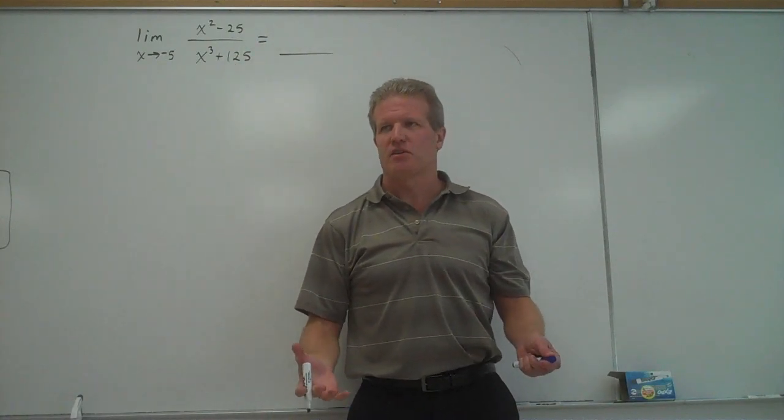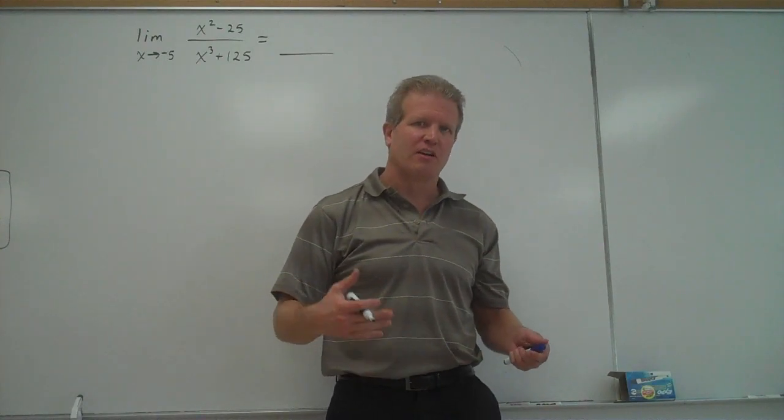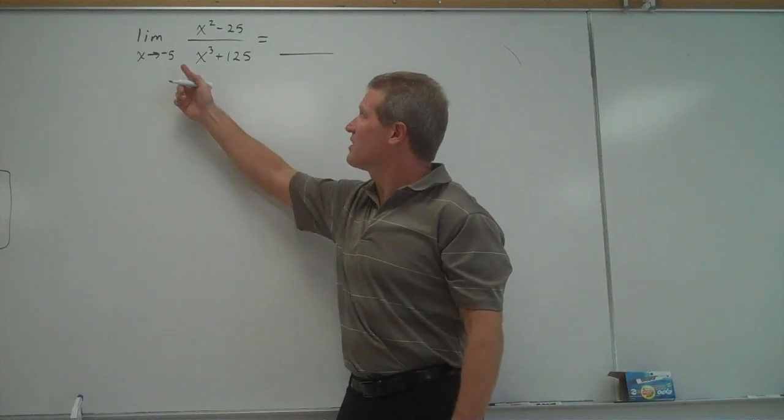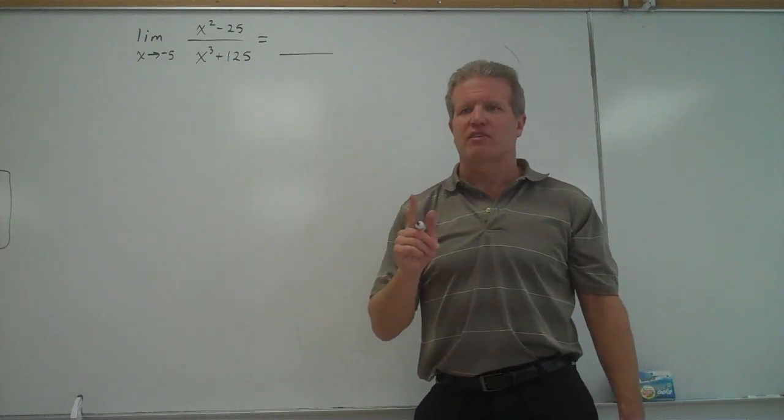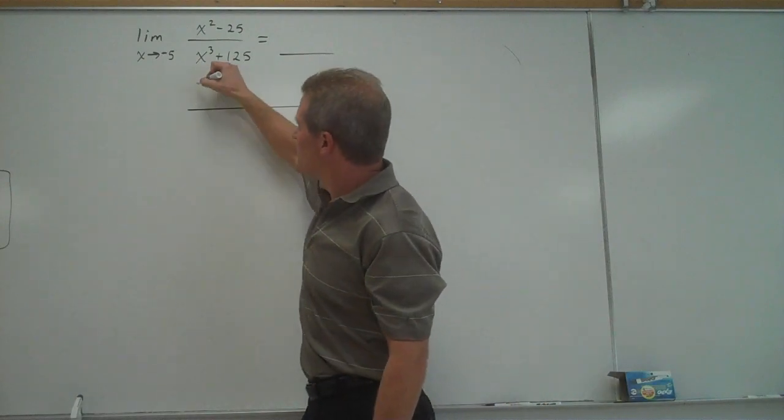Well, that's not my answer. That just tells me if I get 0 over 0, 0 in the numerator, 0 in the denominator, there's a hole in the graph at negative 5. If there's a hole in the graph at negative 5, that tells me there is a common factor in the numerator and denominator of x plus 5.